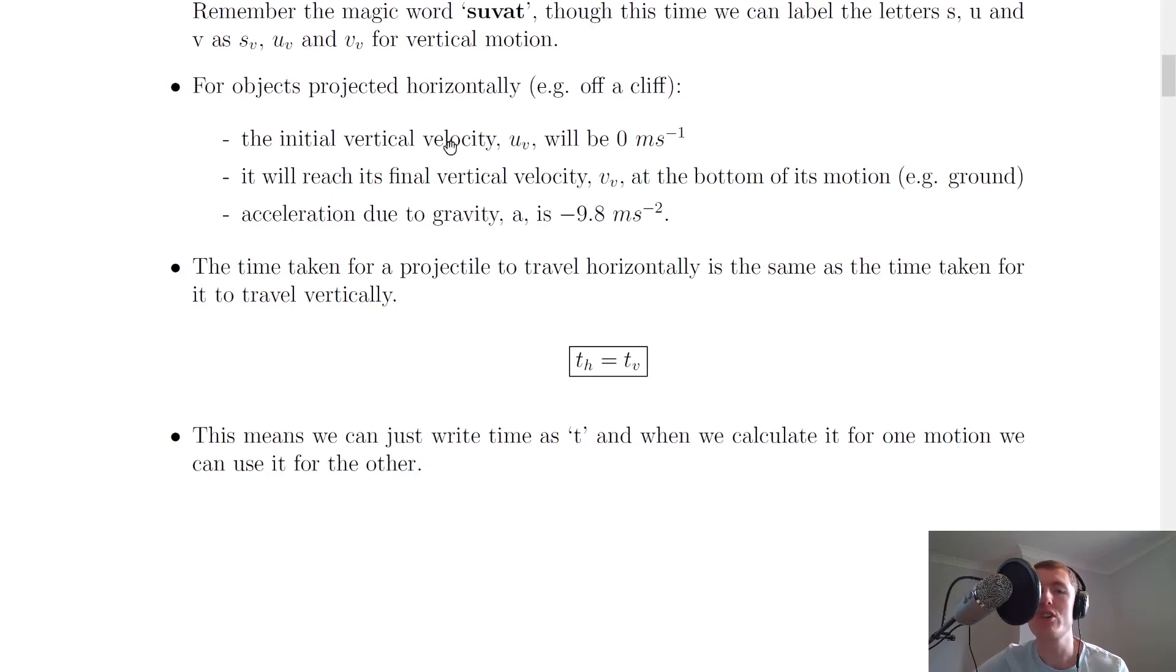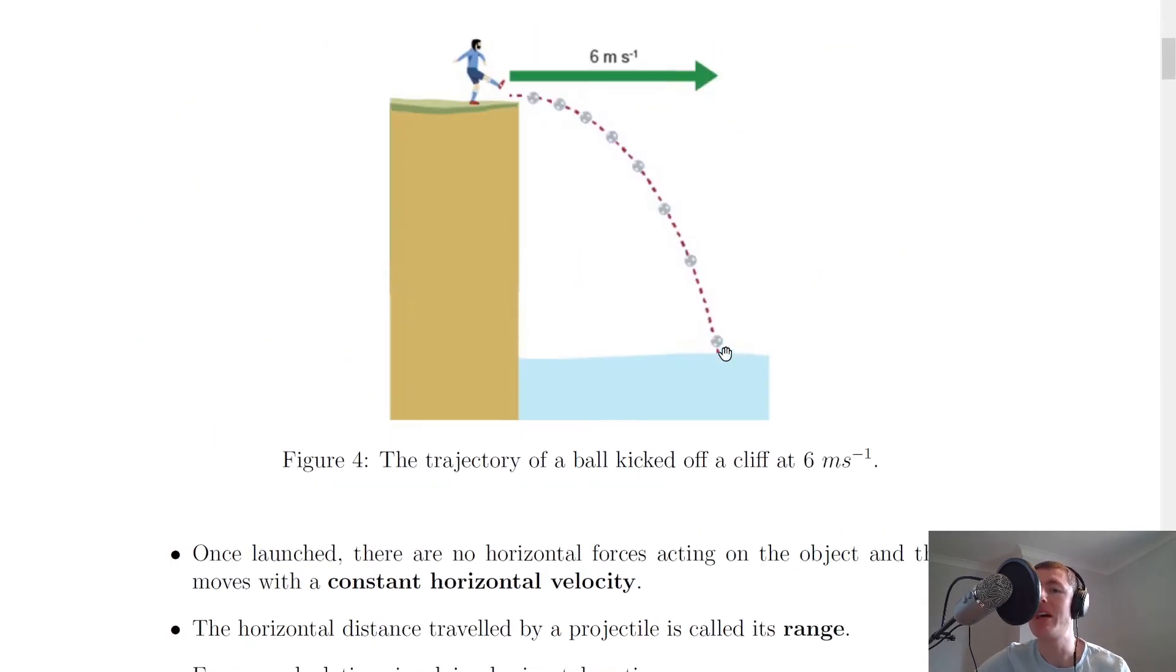For these objects projected horizontally, it will reach its final vertical velocity, vv, at the bottom of its motion, for example, the ground. Or if we look back at the picture, it will be this point down here where the ball hits the water, so it would have a final vertical velocity, v subscript v, at this point here. So we've got uv over here, which would be 0, and vv down here, which would be non-zero.